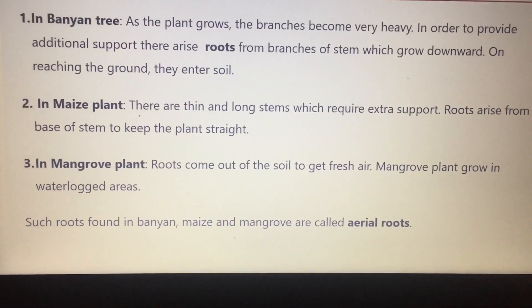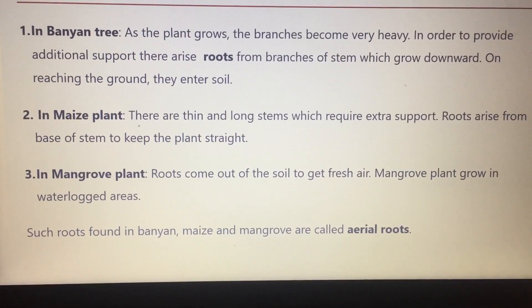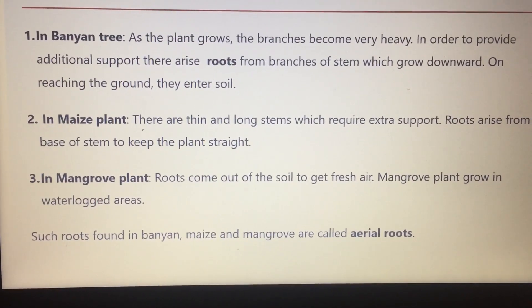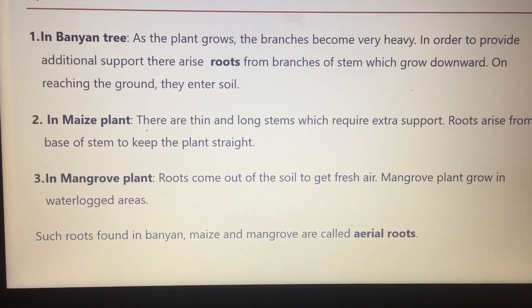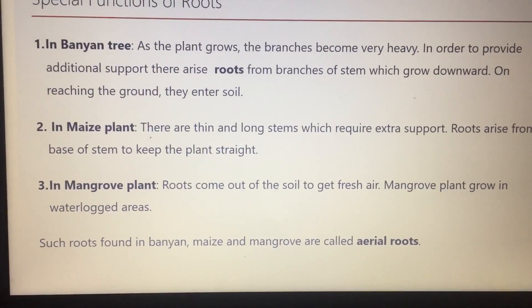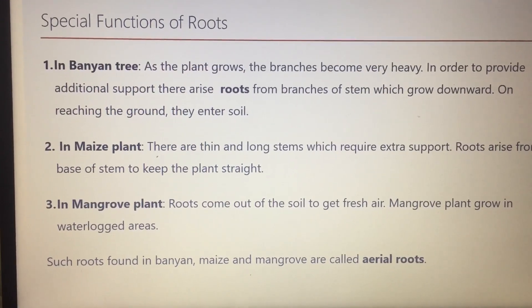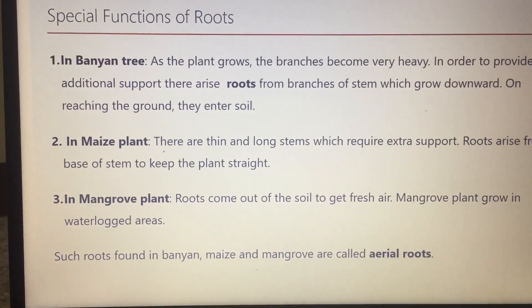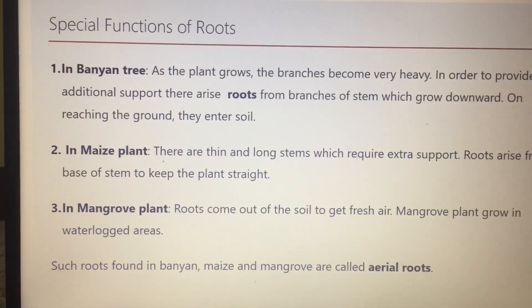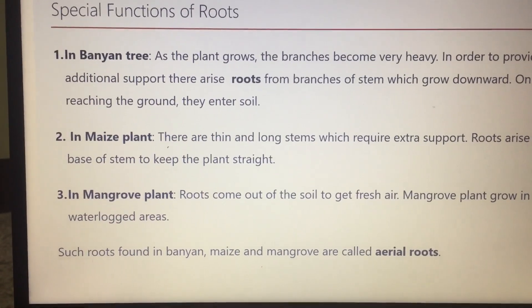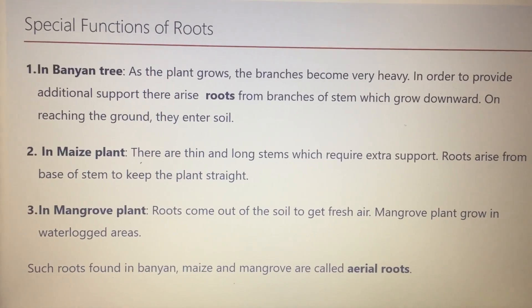Now we will talk about the mangrove plant. The mangrove plants grow in marsh areas, which means waterlogged areas. The roots of the mangrove plants cannot breathe properly in the soil and do not get fresh air. So all the roots of the mangrove plants grow above the ground. They are known as aerial roots, or breathing roots, because they come out of the soil to breathe fresh air.